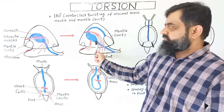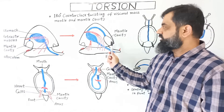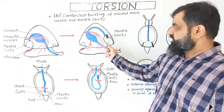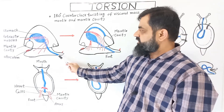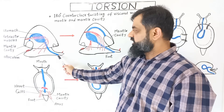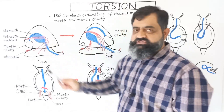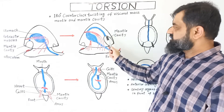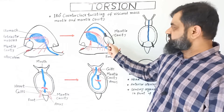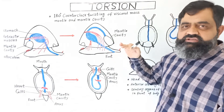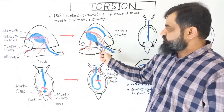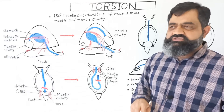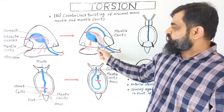Now look at this diagram which shows the anatomy after torsion. You can see that the mantle cavity, which was on the posterior side, has moved toward the anterior side. The digestive system, which was a long straight tube with the mouth on the anterior side and the anus on the posterior side, has changed. Now the mouth is still on the anterior side, but the digestive system has turned into a U-shaped structure and the anus has come up to the top of the head, opening inside the mantle cavity on the anterior surface. The retractor muscles have changed shape and are responsible for the contraction and movement of the body organs, rotating and twisting them at 180 degrees.